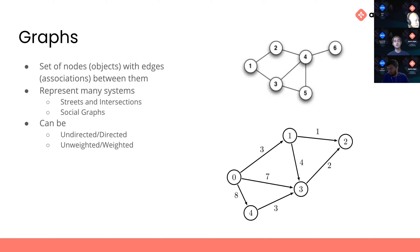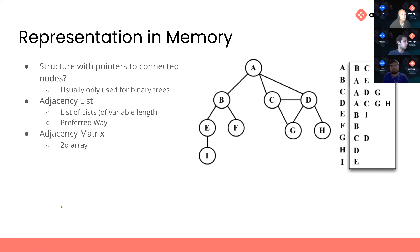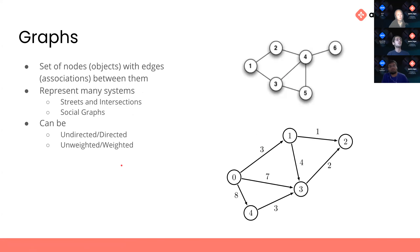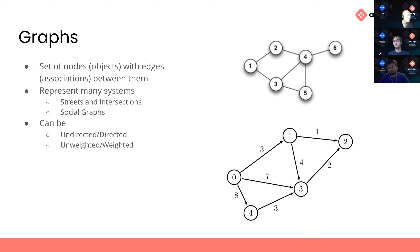This graph can be used to represent many systems. An example is a social graph — you'd use a node to represent a person and an edge to represent a relationship between two people. So if I use node one to represent me and node two to represent Arjun, an edge between us would mean we're friends. It can also represent streets — in CS32 we represented all the streets in Westwood as a graph, with intersections as nodes and streets as edges.